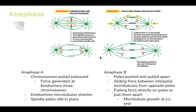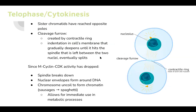In telophase and cytokinesis, sister chromatids have reached opposite poles. A cleavage furrow is created by the contractile ring — it's an indentation in the cell membrane that gradually deepens until it hits the spindle remaining between the two nuclei and eventually splits into two cells. Since M-cyclin CDK activity has dropped, the spindle breaks down, nuclear envelopes form around the DNA, and chromosomes uncoil to form chromatin — the sausages go back to their spaghetti-like state, allowing immediate use in metabolic processes.